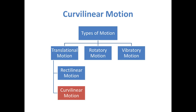In this video we will discuss translational motion. Translational motion is further categorized into two types: rectilinear motion and curvilinear motion. Rectilinear motion is a type of translational motion in which a body moves along a straight line, while curvilinear motion is a type of translational motion in which a body moves along a curved path.